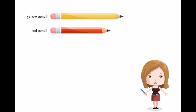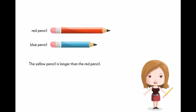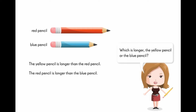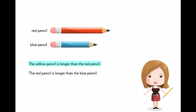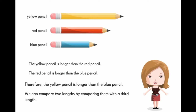I have three pencils here. Let's compare the yellow pencil and the red pencil. The yellow pencil is longer than the red pencil. Now let's compare the red pencil and the blue pencil. The red pencil is longer than the blue pencil. Therefore, the yellow pencil is longer than the blue pencil.